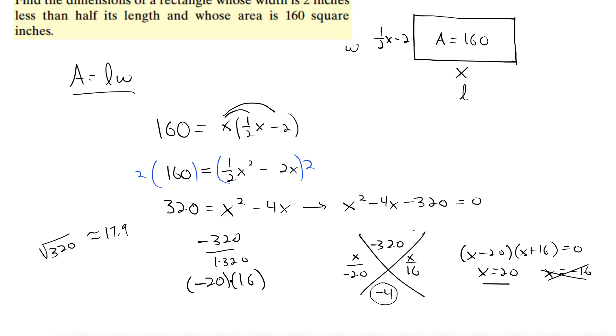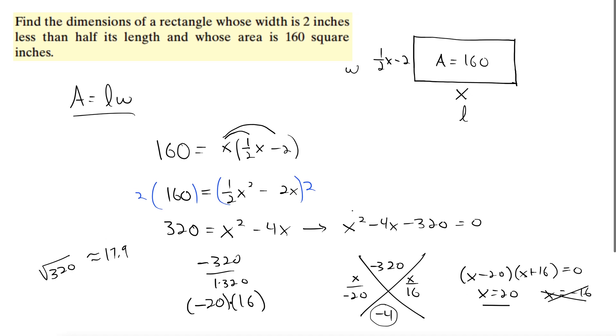Now, let's go and make sure we've answered the question. So I'm going back up. Find the dimensions. So we're not quite there yet. For the length, we have 20 inches, right? Because we're working in inches here. That's what we solved for down below right here. And then for the width, we plug in 20 here. So we have 1/2 times 20 minus 2. So that's 10 minus 2. So 8 inches.